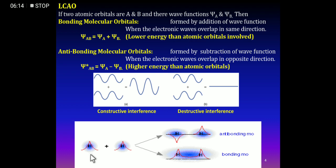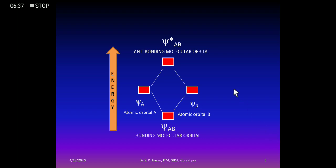Another representation: when ψa + ψb combine in the same direction, a bonding molecular orbital forms with energy lower than the atomic orbitals. When they combine in opposite directions, an anti-bonding molecular orbital forms with energy higher than the atomic orbitals. On the energy diagram, ψ(ab) lies below and ψ*(ab) lies above the atomic orbital energy levels.